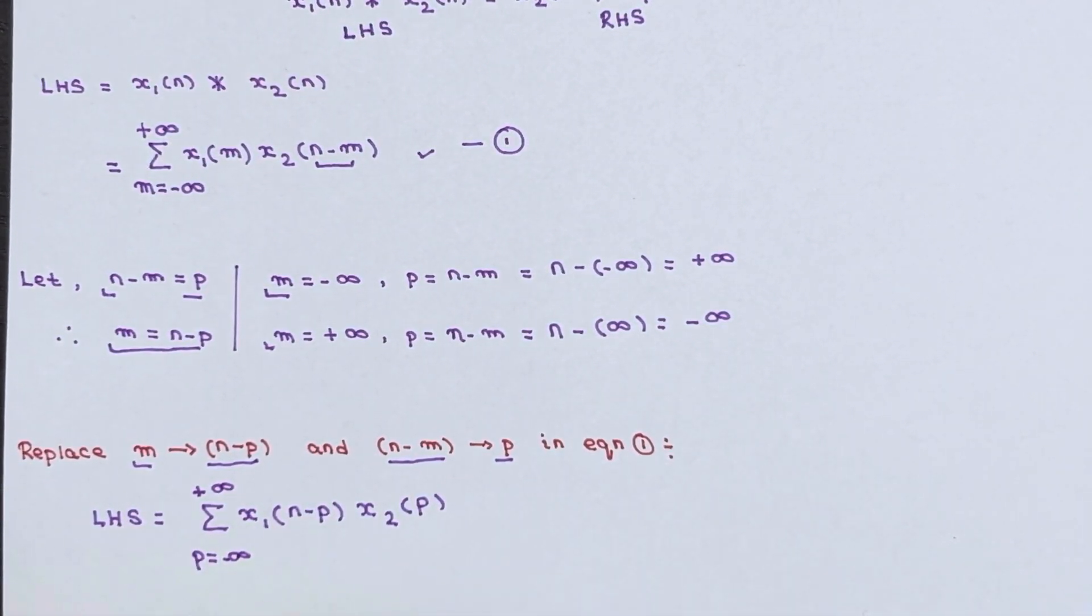So now rearrange this. You can write this as summation of x2(p) into x1(n-p) where the limit of p ranges from minus infinity to plus infinity. Clear.